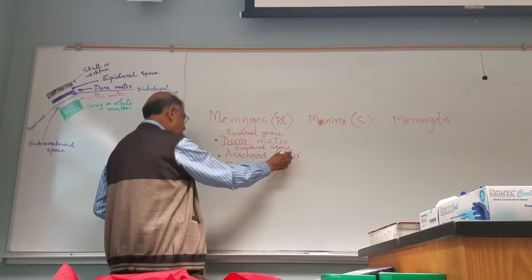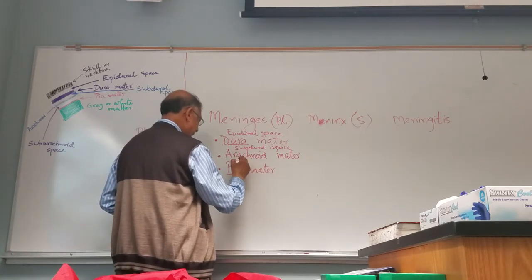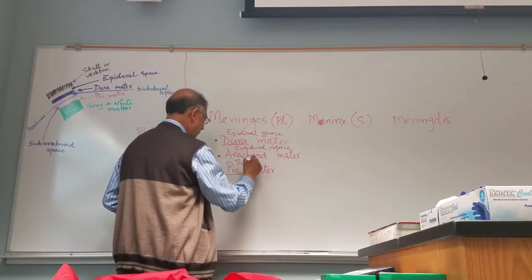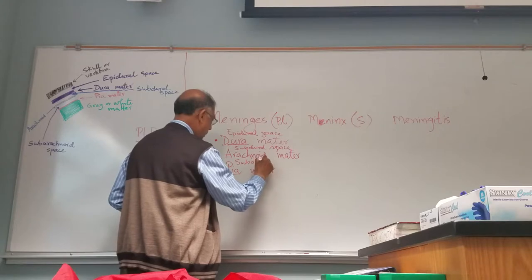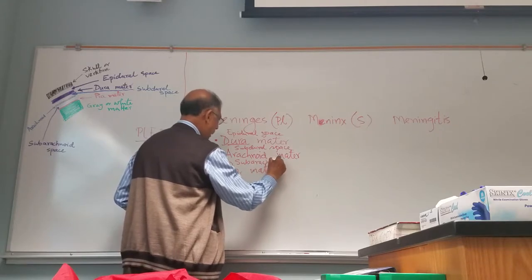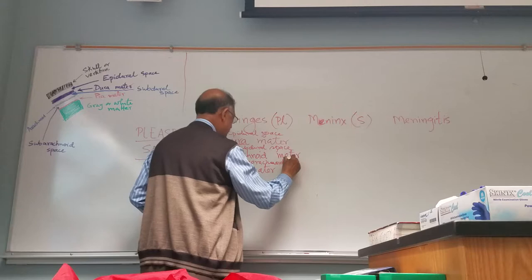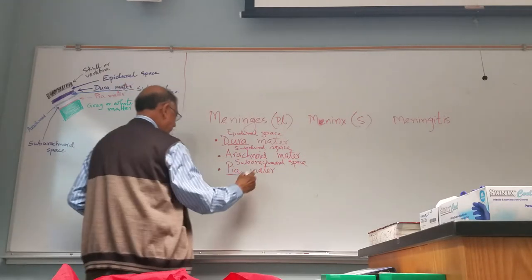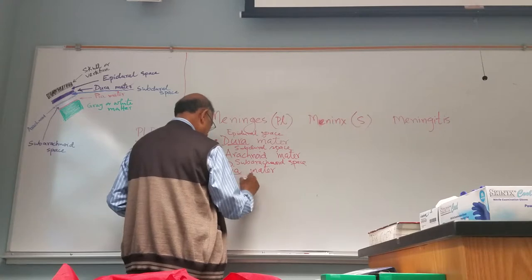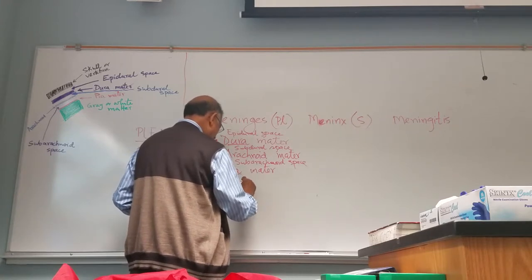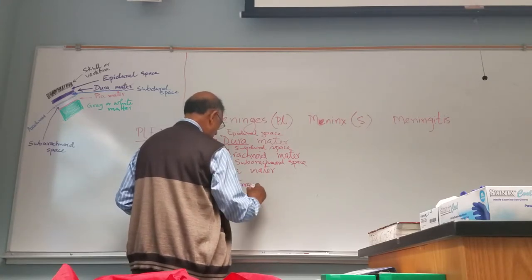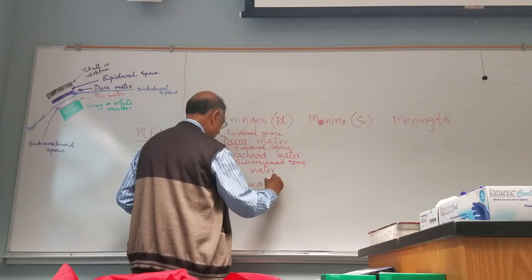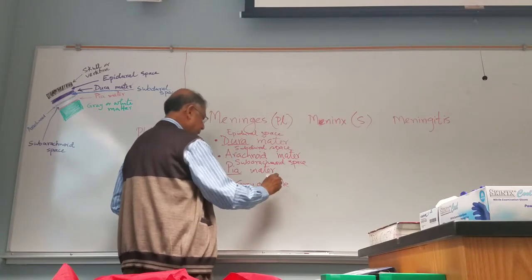And between arachnoid mater and pia mater is the subarachnoid space. Below pia mater will be, if it is brain, it will be gray matter. Gray or white matter in case of spinal cord.